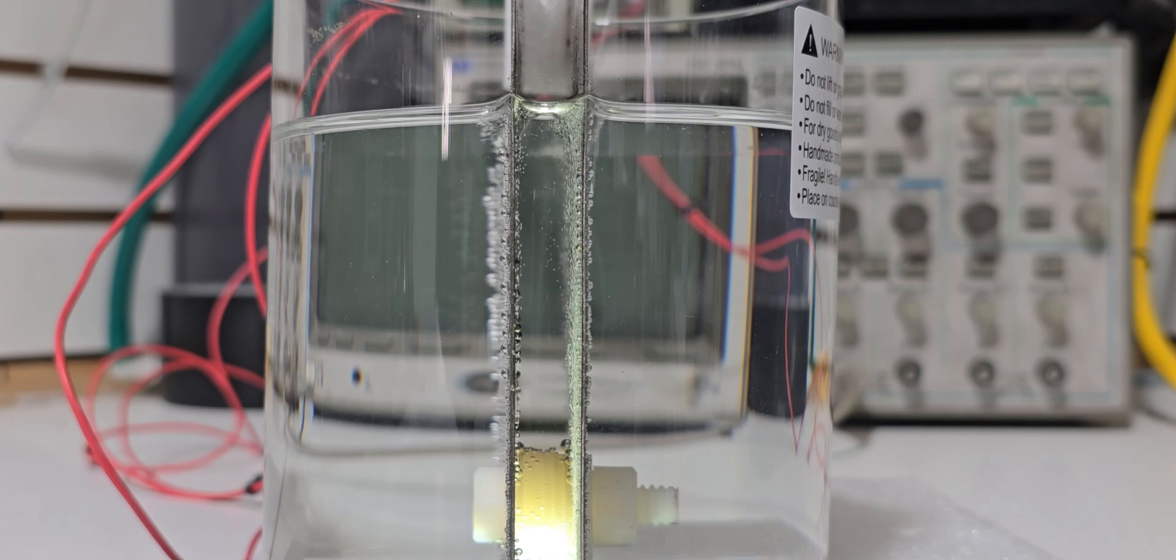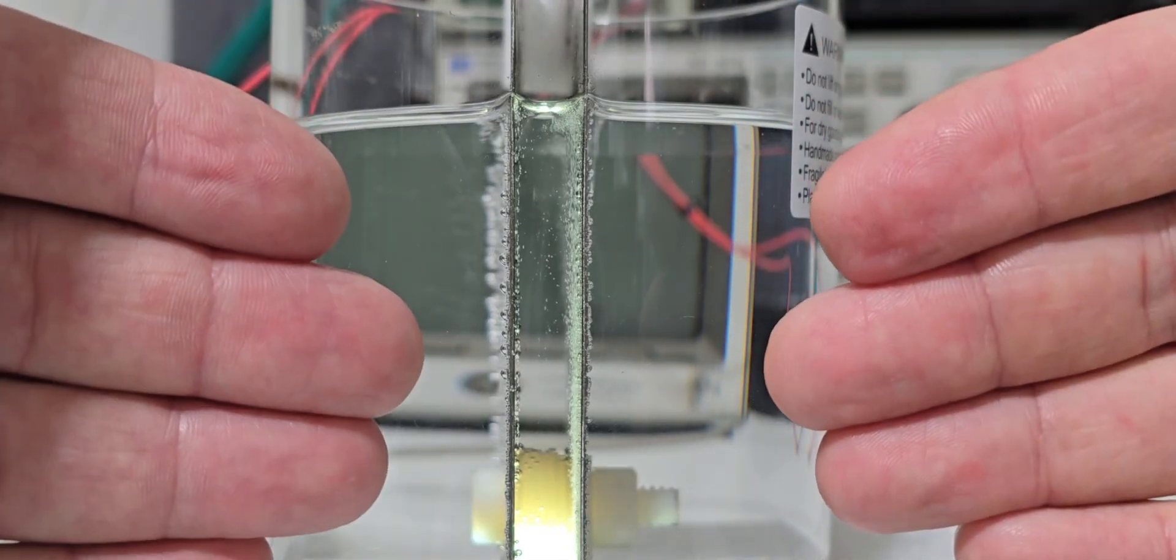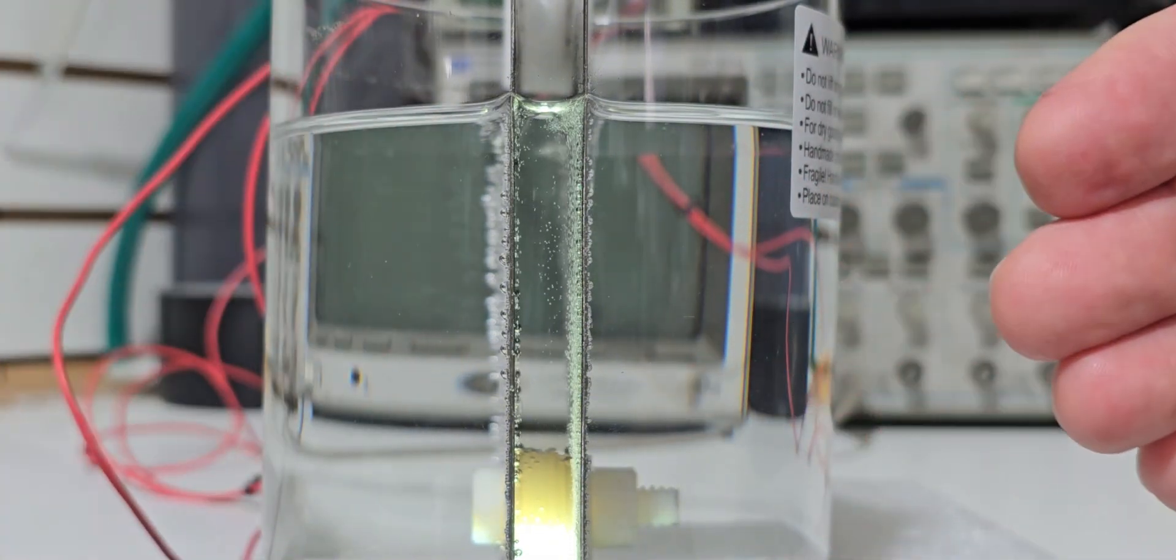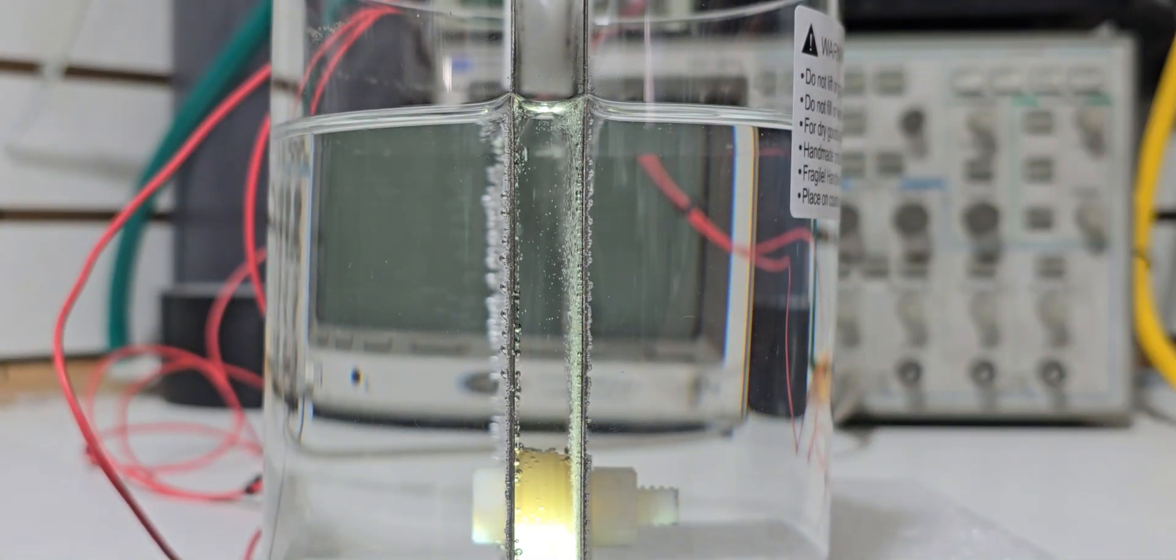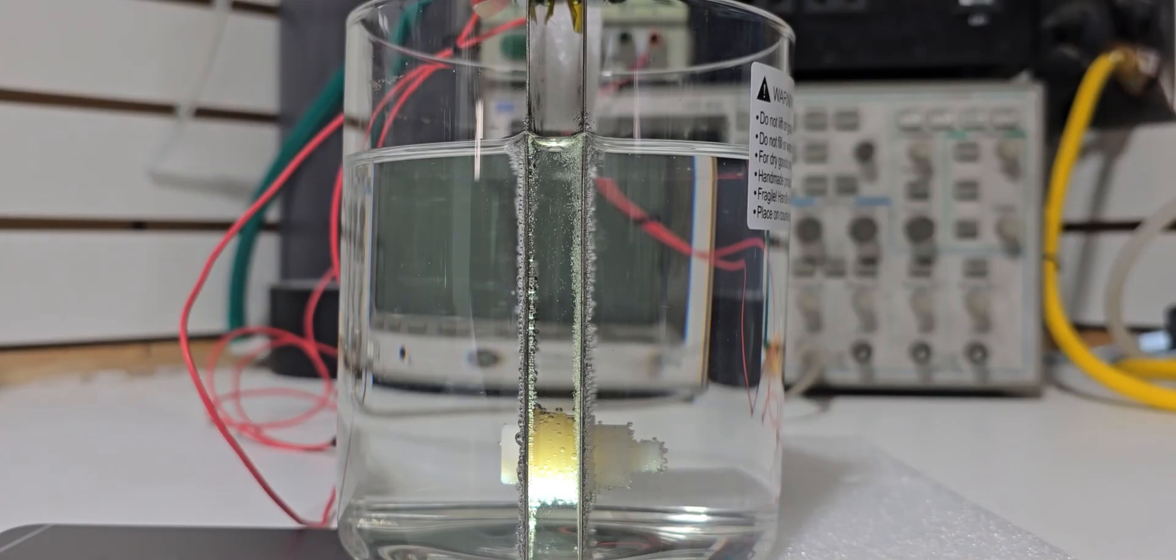There is a theory out there that when you take water and you put electricity to it and you break it down into hydrogen and oxygen that there's a third mystery gas that is produced called electrically expanded water. But it only can be produced in an alkaline type electrolyzer. Alkaline electrolyzers are the type of electrolyzers that use distilled water and lye.